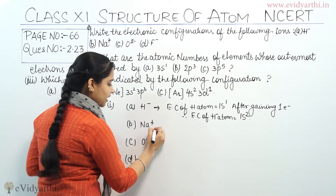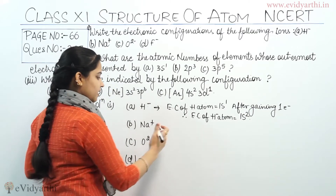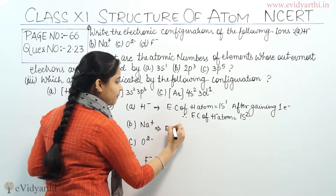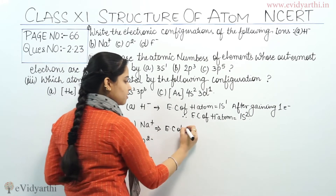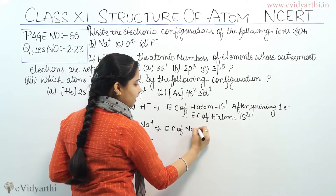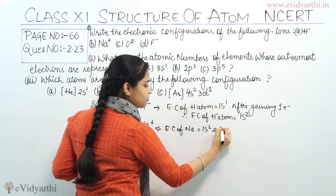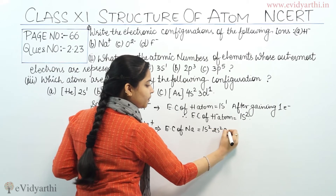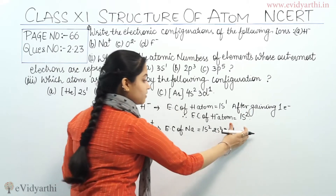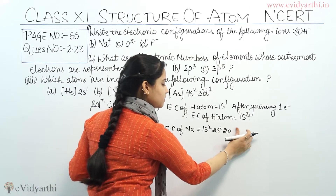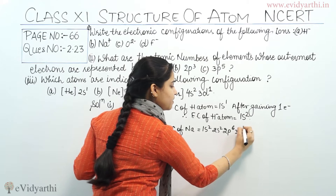Coming to the second B part: Na positive. The electronic configuration of Na is equal to 1s2, 2s2, 2p6, 3s1. Sodium comes at the 11th position — Hydrogen, Helium, Lithium, Beryllium, Boron, Carbon, Nitrogen, Oxygen, Fluorine, Neon, Sodium.